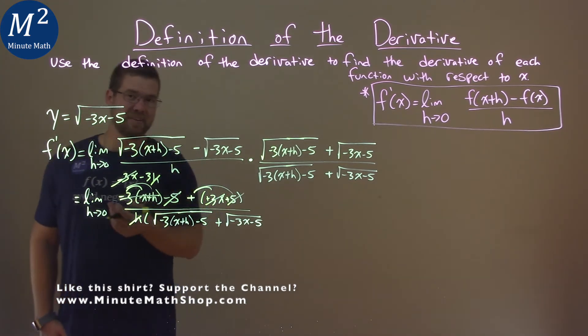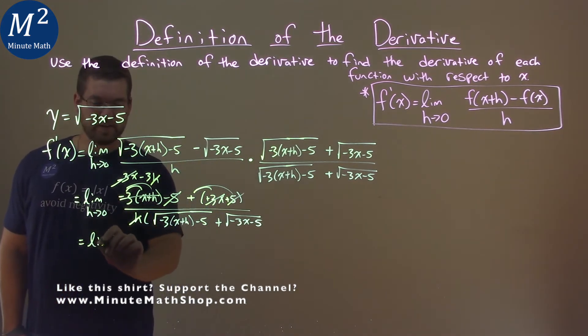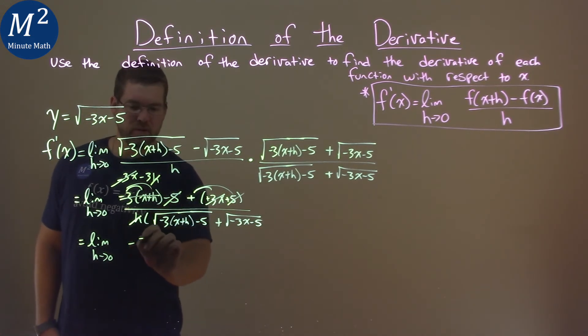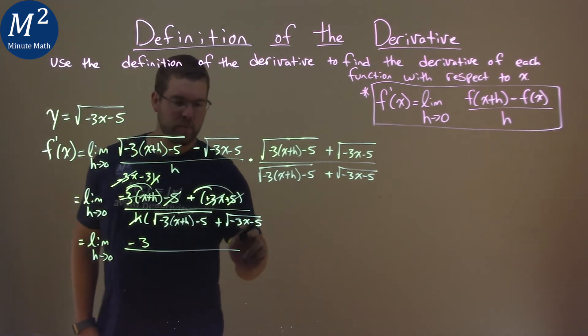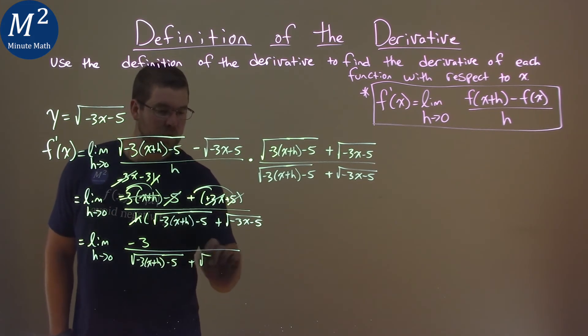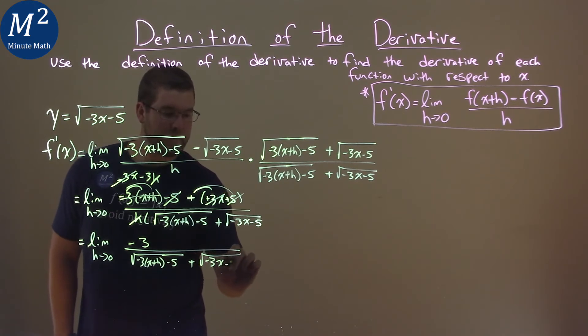So, what do we have now? We have the limit as h approaches 0. I kind of did a lot of steps there. Negative 3, this one right there, is the only thing left over in the numerator. Our denominator is this whole big bad boy right there. The square root of negative 3 times x plus h minus 5 plus the square root of negative 3x minus 5.